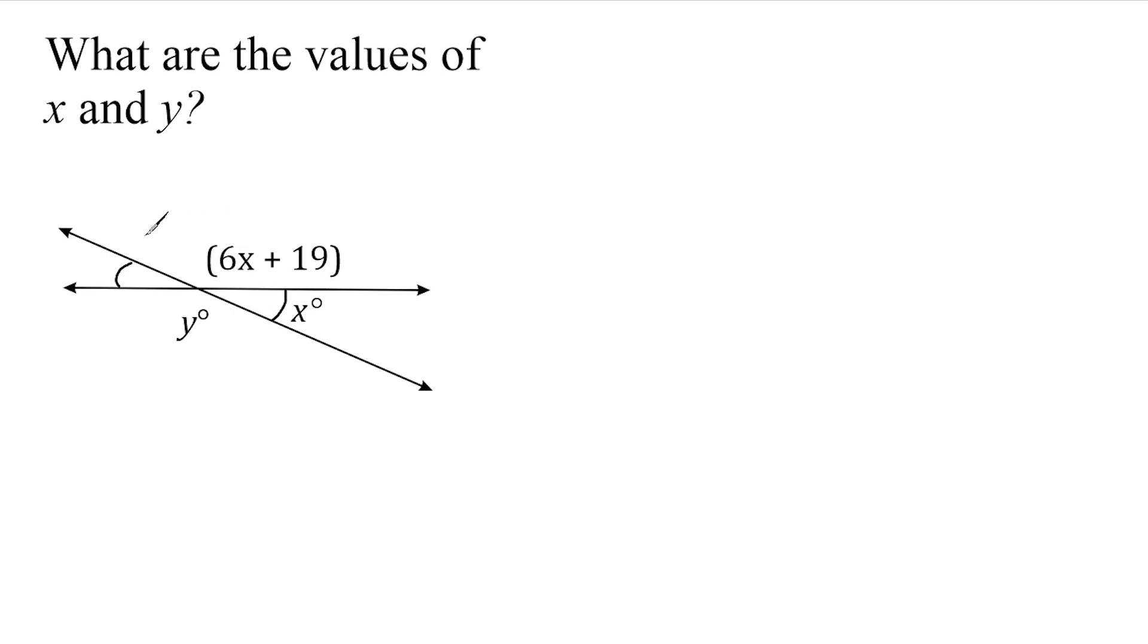And the ones right next to each other when two lines are intersecting form supplementary angles. So this angle here and this angle here together form a 180 degree angle or a straight angle.